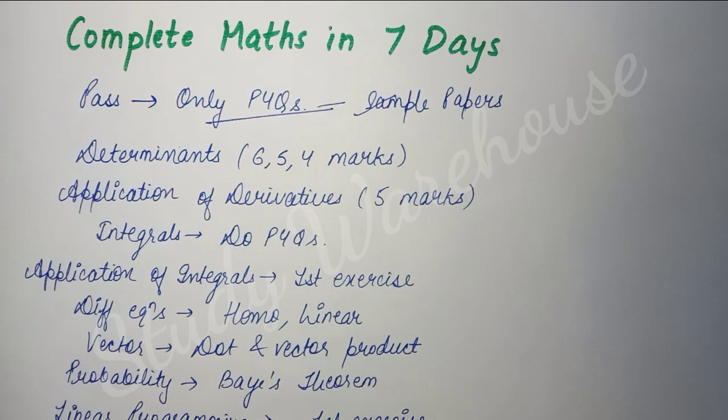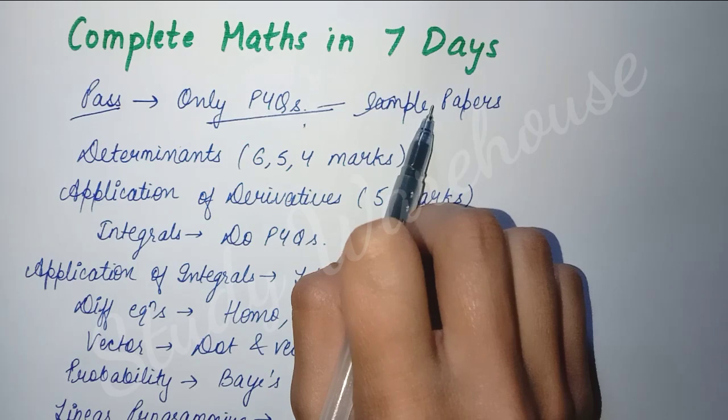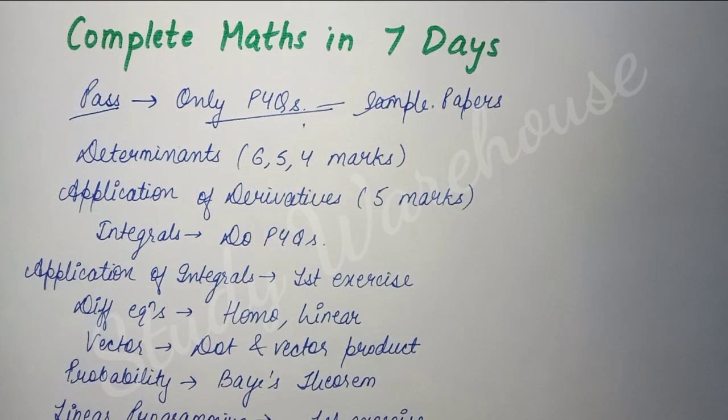One mark questions you should do from the sample papers. The five mark or six mark questions that come in boards, they are repeatedly asked. You can check PYQs from the previous ten years - the questions are almost repeated, some values would be changed but the paper is almost the same. So if you just want to pass, only do the PYQs and the sample papers, don't do anything except it. If you have time for NCERT then complete it, but if you have only one month and you have to cover every subject, just do important questions, PYQs, and sample papers. If you just want to pass, don't do anything else.